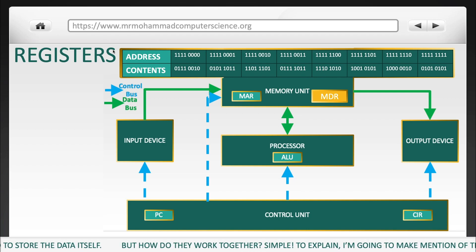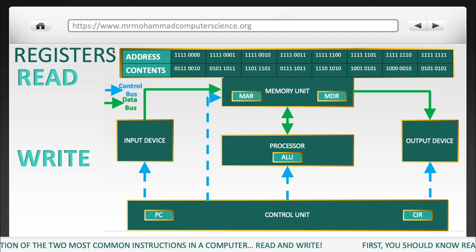Simple. To explain, I'm going to make mention of the two most common instructions in a computer: read and write. First, you should know read is simply finding or displaying data, and write is to create or add data.